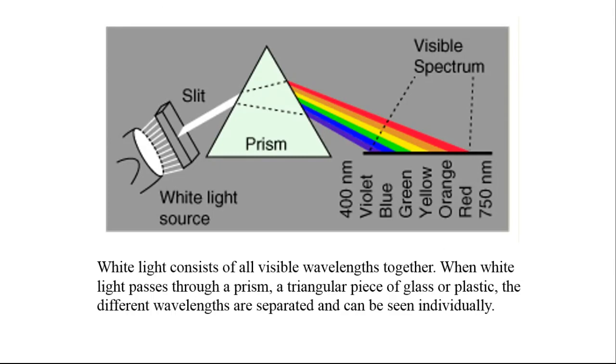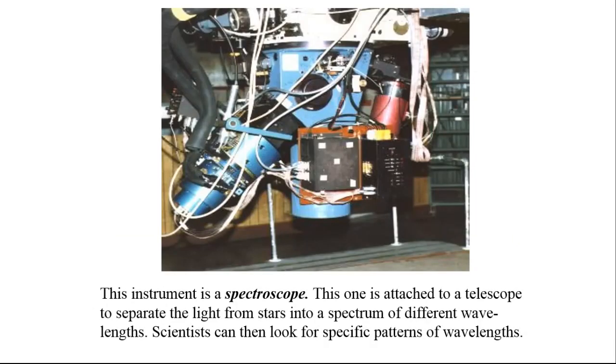We see different wavelengths as different colors ranging from red (long wavelengths) to blue-violet (short wavelengths). White light consists of all visible wavelengths together. When white light passes through a prism, a triangular piece of glass or plastic, the different wavelengths are separated and can be seen individually.